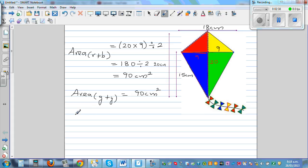So the area of the kite would be 90 plus 90, which is 180 centimeter squared.